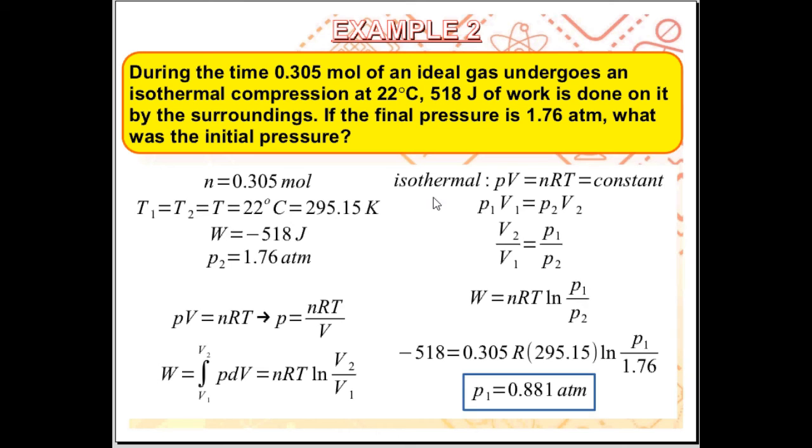Again, isothermal, so PV is equal to nRT is equal to constant, which gives us P1 V1 is equal to P2 V2. Rearranging and substituting into our equation for work, we have work is equal to nRT Ln of P1 over P2.